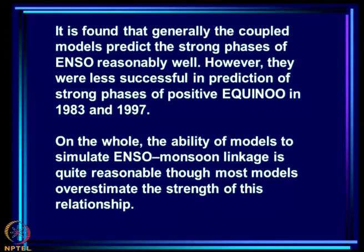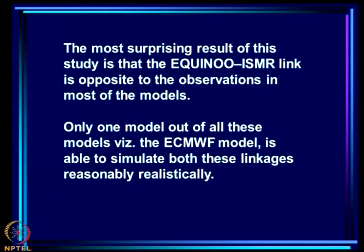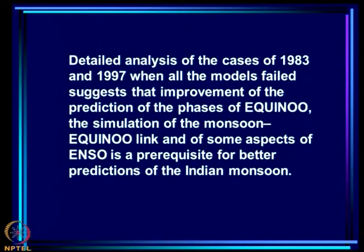Only the ECMWF model has realistic links with EQUINOO. It is found that coupled models generally predict strong phases of ENSO reasonably well, however they were less successful in prediction of strong phases of positive EQUINOO in 1983 and 1997. On the whole, the ability of models to simulate the ENSO–monsoon linkage is quite reasonable, though most models overestimate the strength of this relationship. The most surprising result is that the EQUINOO–ISMR link is opposite to observations in most models.